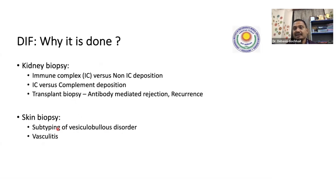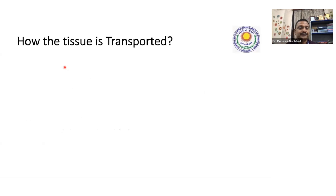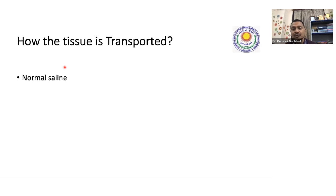How is the tissue transported? In routine histopathology, tissue is put into formalin as early as possible. But if you put the tissue into formalin, it will not be useful for immunofluorescence — we need fresh tissue. Once it's put into formalin, we cannot do immunofluorescence on it. If it is intra-institutional and transportation time is less than two to three hours, you can put it in normal saline and transport it.